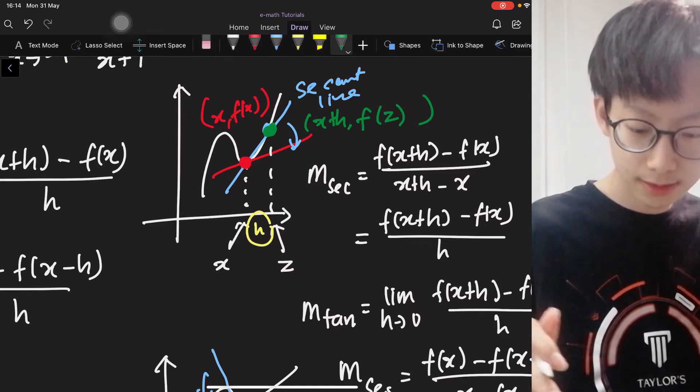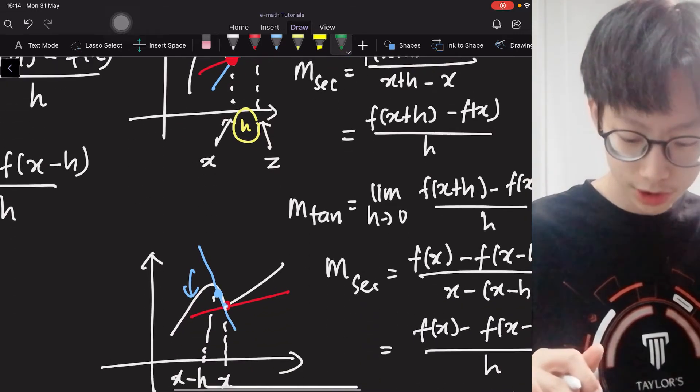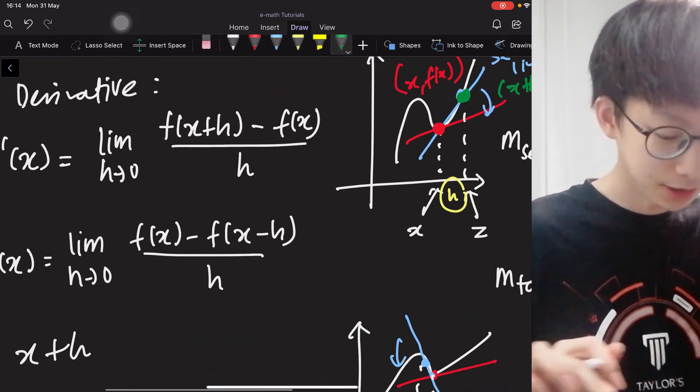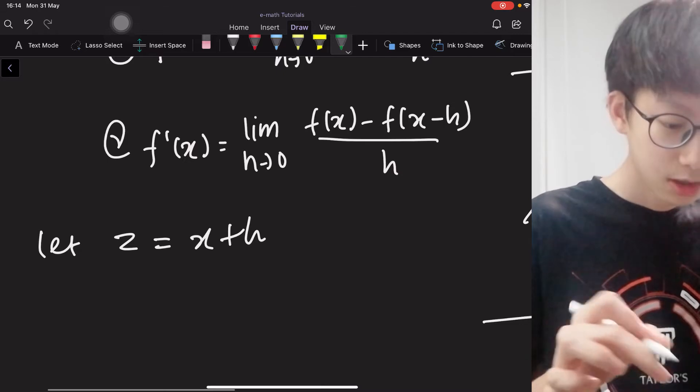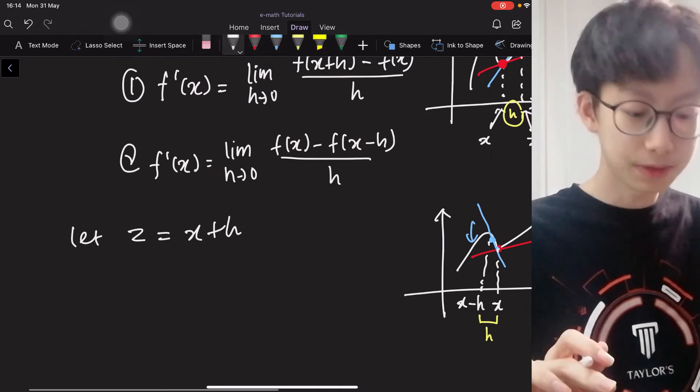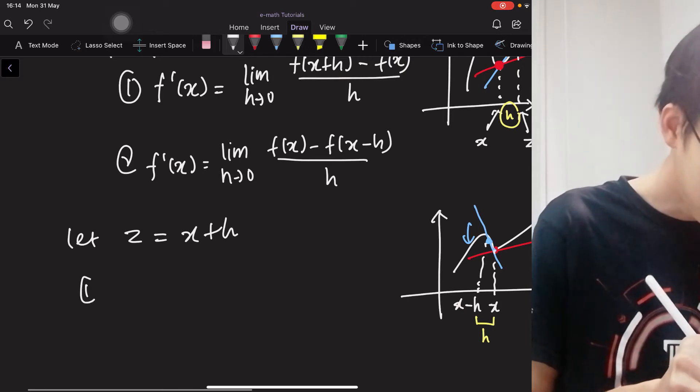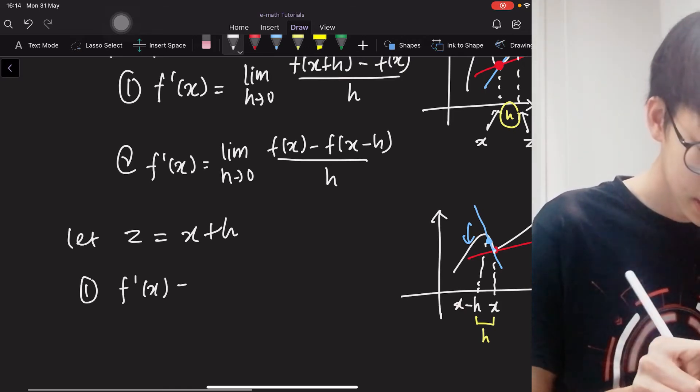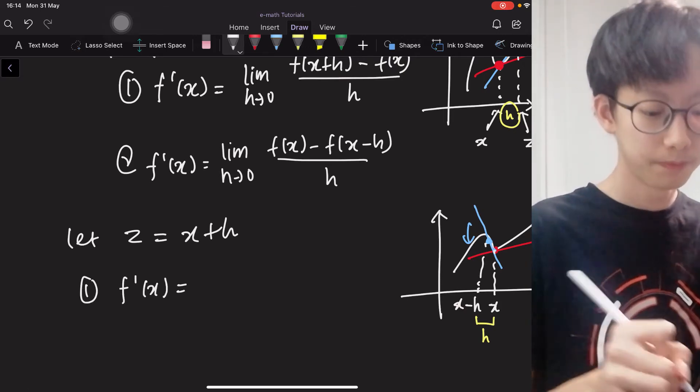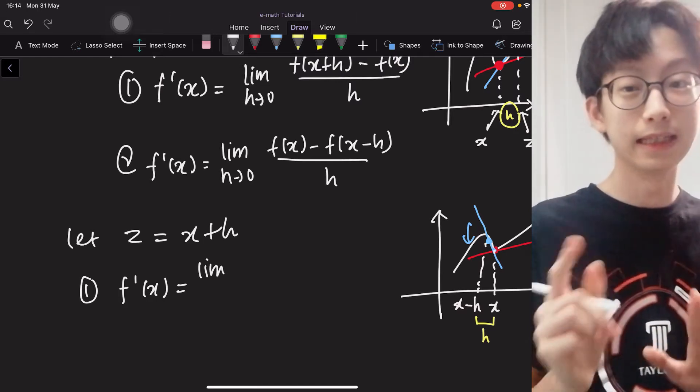And then this, the whole thing here will change. Okay, I think I will directly change it here. So if we let z be x plus h, then what happens to our formula? f'(x) is equals to limit, okay, this time you take note, instead of writing h approaches 0,